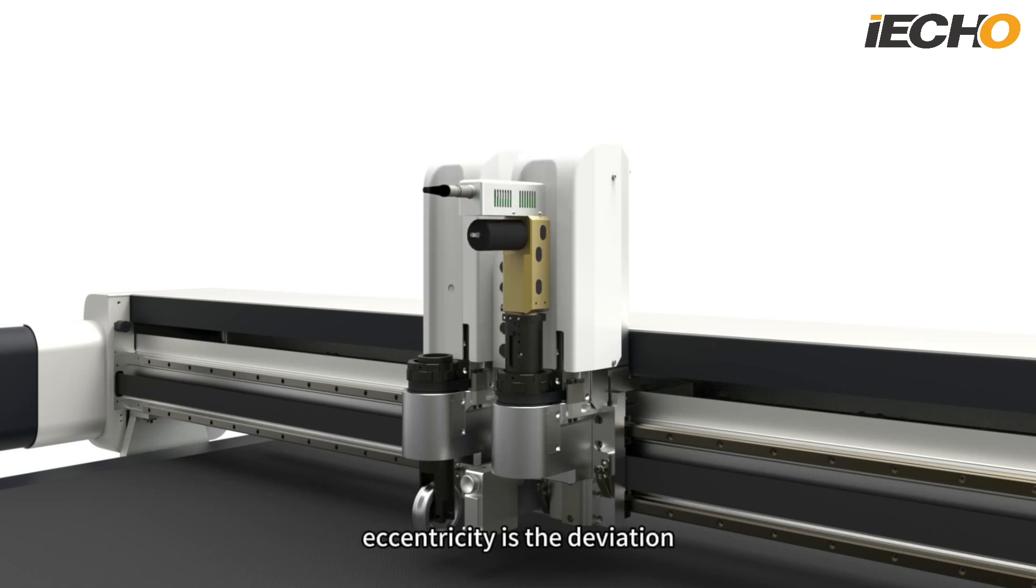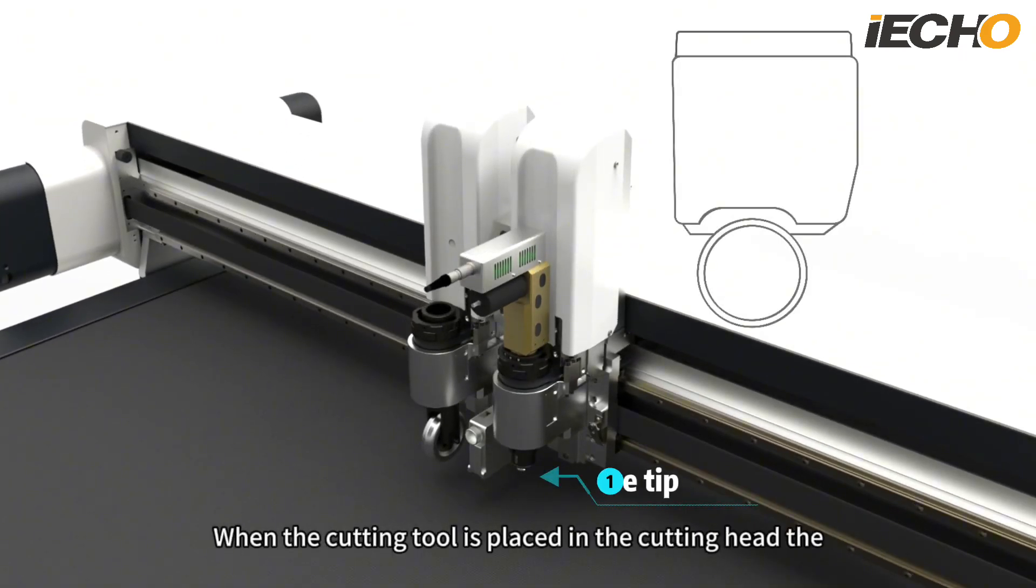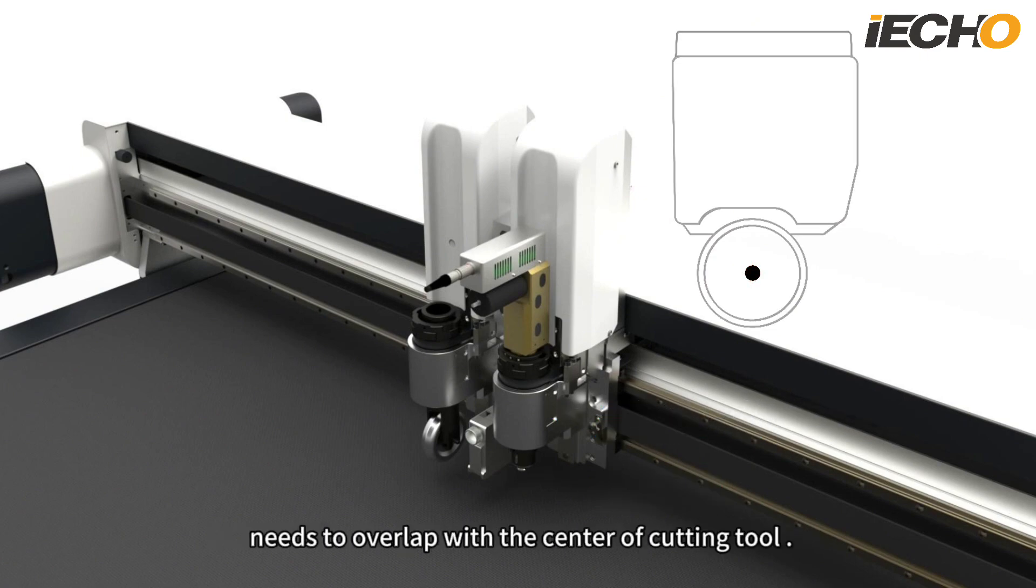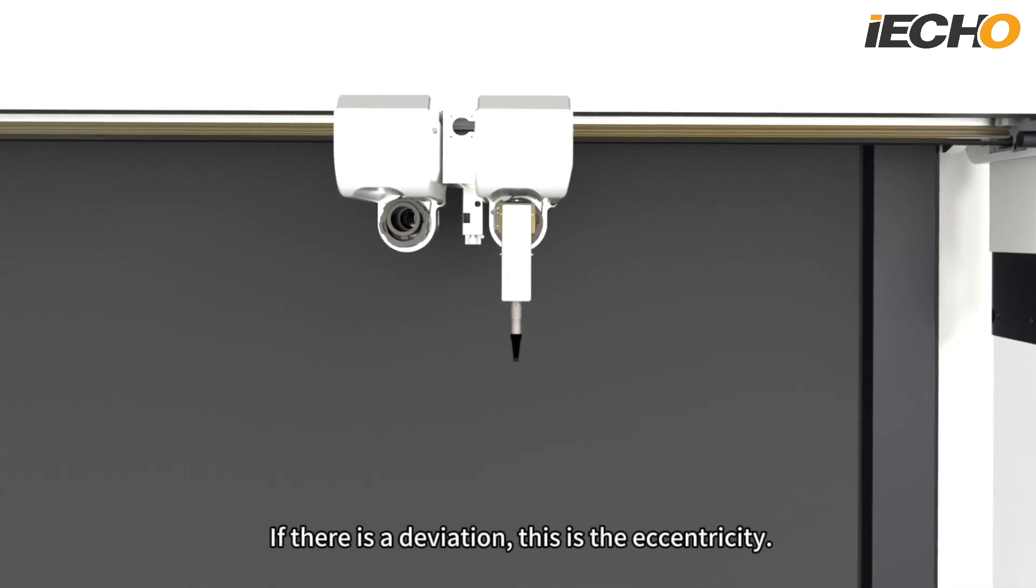What we mean by eccentricity is the deviation between the center of the blade tip and the cutting tool. When the cutting tool is placed in the cutting head, the position of the blade tip needs to overlap with the center of cutting tool. If there is a deviation, this is the eccentricity.